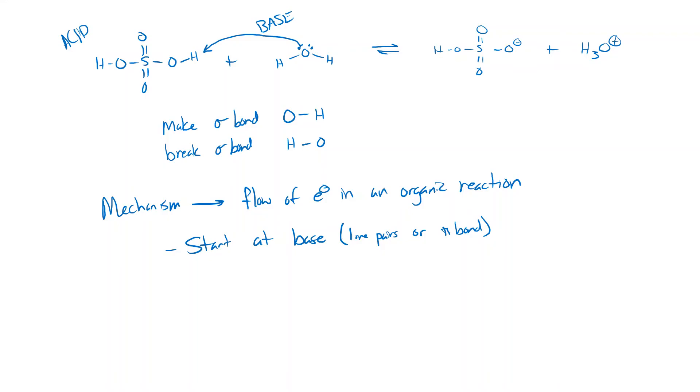The lone pair stays on the oxygen — oxygen is too electronegative to just give away its electrons. What it's doing is sharing those electrons with the hydrogen on sulfuric acid. We can think of this in terms of partial charges: all the hydrogens have delta pluses, the oxygens have delta minuses, so there is an attraction between the hydrogen on sulfuric acid and the oxygen of water.